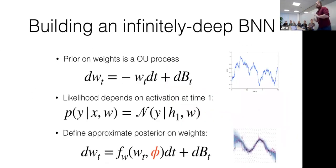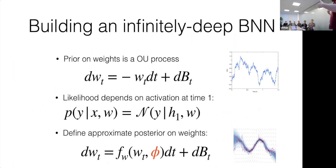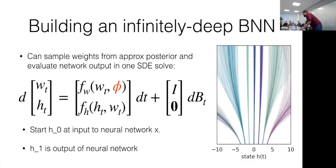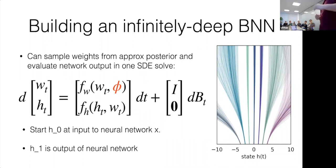One cool follow-up is building an infinitely deep Bayesian neural network with sensible posteriors — Radford Neal was doing this in 1992 by stacking deep GPs, but it was hard to do in a way that didn't forget the input. We can say: the weights at every layer follow an Ornstein–Uhlenbeck process, and we have one final time that is the output of the network. We then have an approximate posterior on weights with its own variational parameters — one giant SDE where integrating forward in time goes from input to output. The weights are non-differentiable, but the activations are smoothed by integrating over weights times current activations.